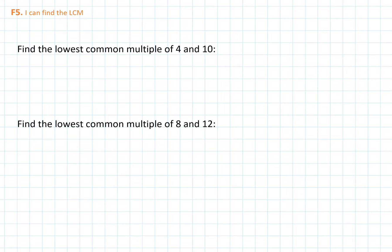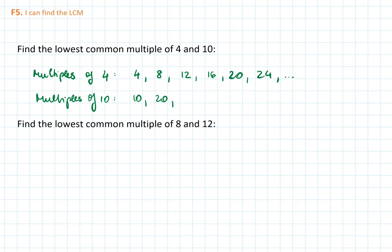So now let's find the lowest common multiple of a few more numbers. The lowest common multiple of 4 and 10 can be found by first listing the multiples of 4 and 10. The multiples of 4 are 4, 8, 12, 16, 20, 24. And then the multiples of 10 are 10, 20.